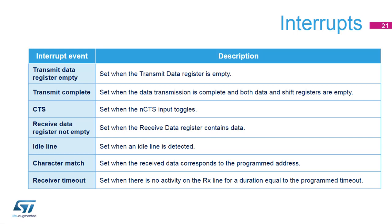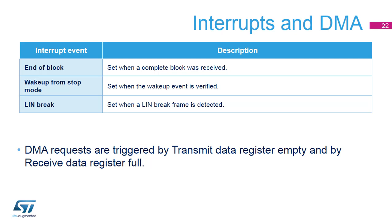Several events can provide an interrupt. The transmit data register empty flag is set when the transmit data register is empty and ready to be written. The transmit complete flag is set when data transmission is complete and both data and shift registers are empty. The CTS flag is set when the NCTS input toggles. The receive data register not empty flag is set when the received data register contains data ready to be read. The idle line flag is set when an idle line is detected. The character match flag is set when the received data corresponds to the programmed address. The receiver timeout flag is set when there is no activity on the RX line for a programmed duration. The end of block flag is set when a complete block is received. The wake-up from stop mode flag is set when the wake-up event is verified.